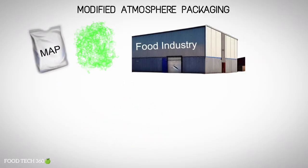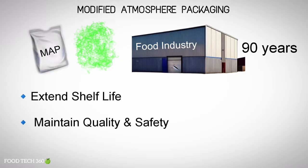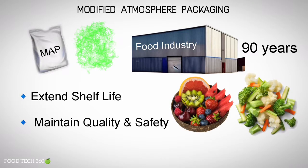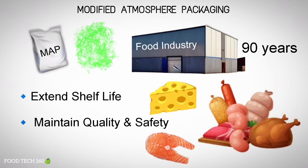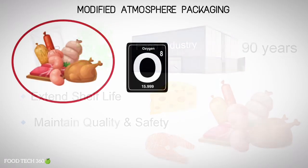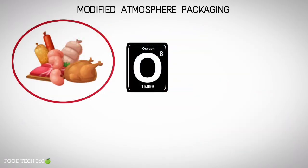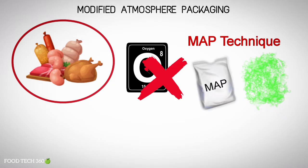Modified atmosphere packaging has been applied in the food industry for over 90 years to extend shelf life and maintain quality and safety of fresh and fresh-cut food products. These include cheese, meats, fish, and other perishable food items. These foods are commonly packaged with oxygen removed using the modified atmosphere packaging technique.